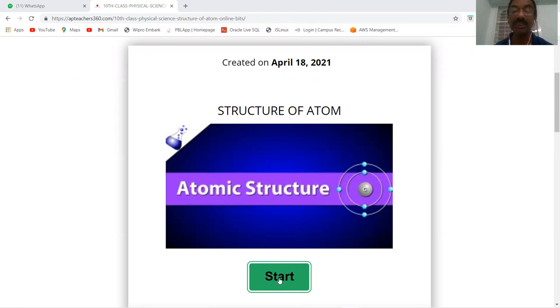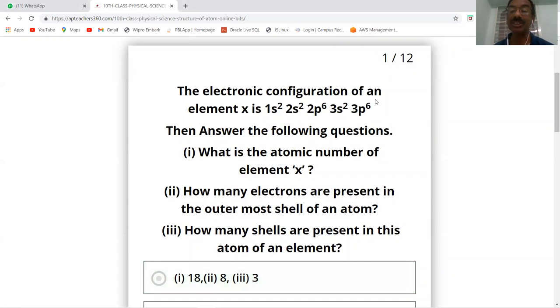First question on the screen. The electronic configuration of an element X is 1s2, 2s2, 2p6, 3s2, 3p6. Then answer the following questions.